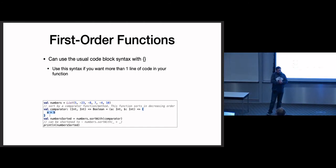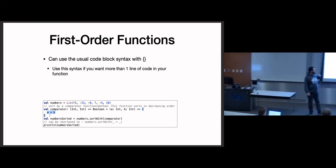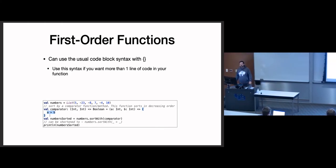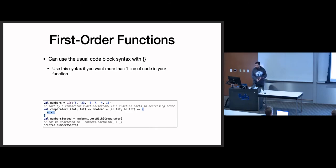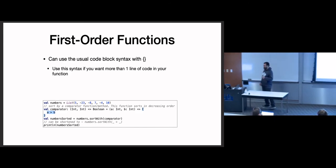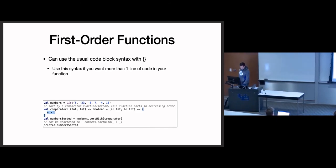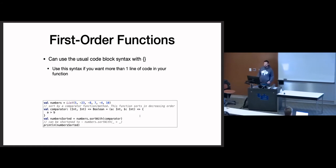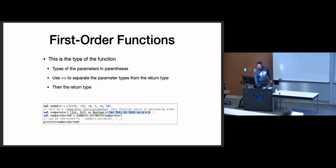Usually our programs are going to have a mix of FP and OOP and procedural programming. That's a fact of life — if you have an app with a million users you have to be distributed. So that's a lot of the reason why we're talking about first-order functions and functional programming in general. Back to the code: we can use braces in our code. We have our parameter list, instead of just an equal sign we have the big arrow, and then the definition of the function. The type is going to match the types of the inputs and the type of the output.